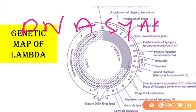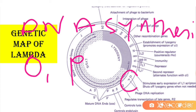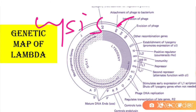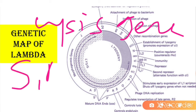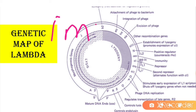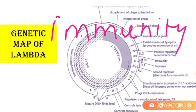The DNA synthesis genes are O and P — these are the phage DNA replication genes. The lysis genes are S and R — these two genes control lysis of the bacterial cell envelope, which marks the end of the lytic cycle.